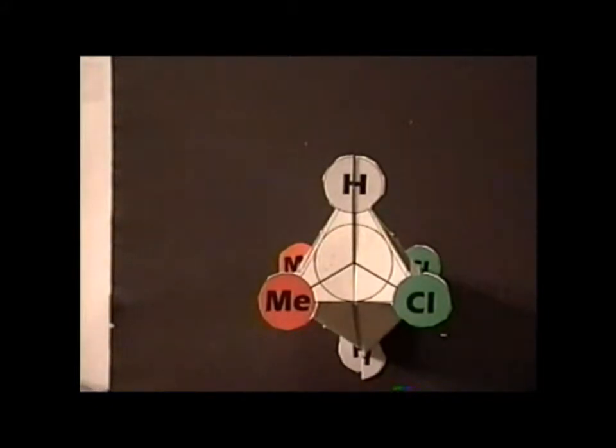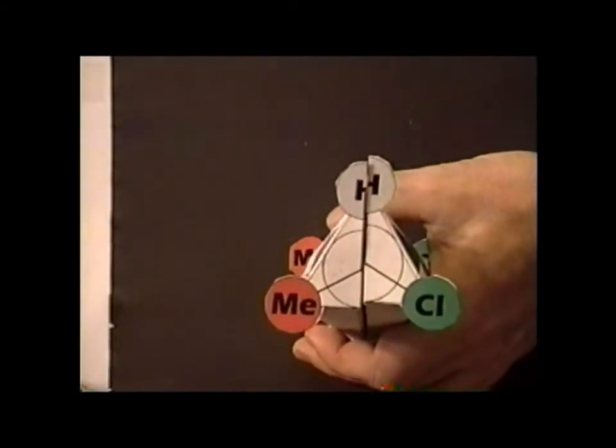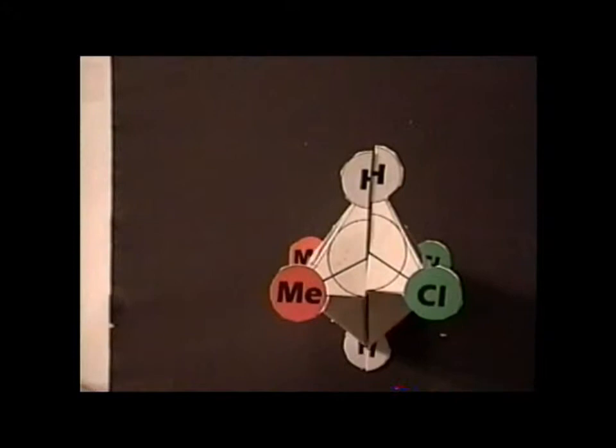Here we have another more slightly complicated substituent pattern for what we recognize as generally a staggered conformation. In this case we actually have a substituted butane because we have two additional methyl groups, so we have four carbons total.